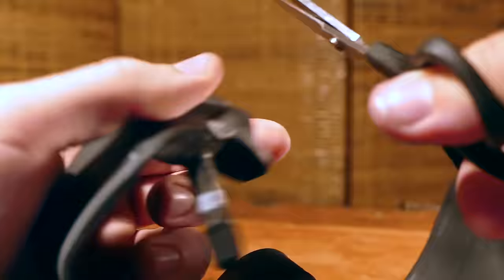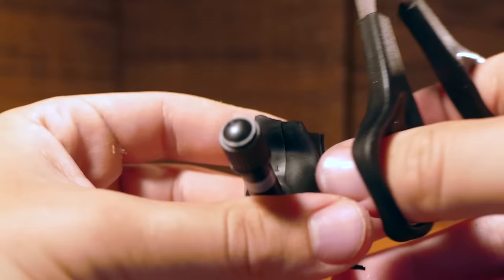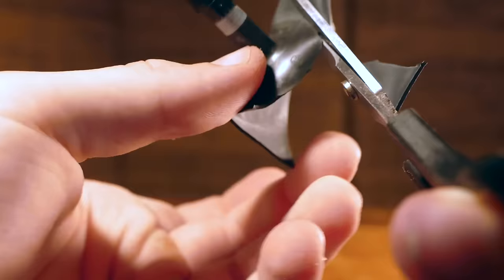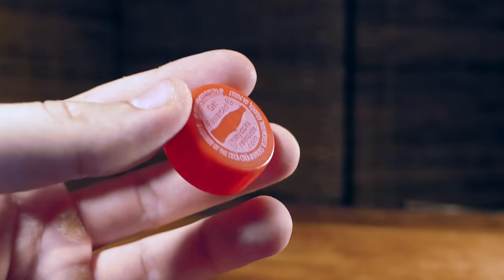And we're going to go ahead and just cut off the part with the bike tire valve. You should be left with something like this, with a little bit of rubber still around the outside.